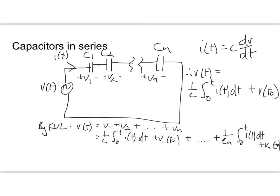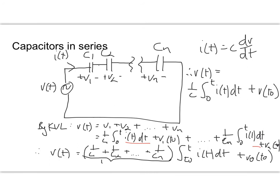And we know that all of these I of T dt are the same, so therefore we can say V of T is equal to 1 upon C1 plus 1 upon C2 plus and so on, up to 1 upon Cn times the integral from T nought to T of I of T dt plus the initial voltage V nought at time T nought. And this then is the equivalent capacitance, 1 upon C equivalent for capacitors in series.